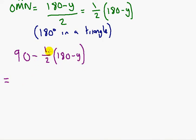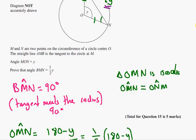We need to multiply out this bracket. So that's going to be 90 minus half times 180 is minus 90. Minus half times minus Y is positive half Y. And therefore the 90 take away 90 cancel each other out, and you're left with half Y. And that is angle BMN.